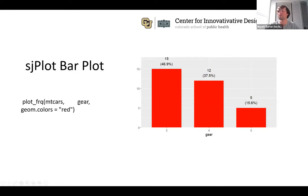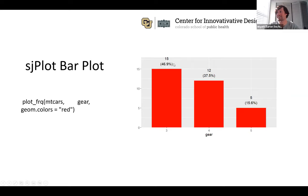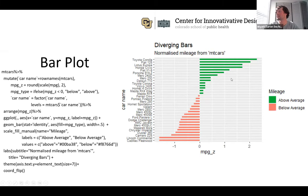The sjplot bar plot is actually a lot better for quick use — much cleaner and simpler. You just load the data, specify the variable, and optionally set a color. It automatically gives you the percentage and count for each level. The only downside is you can only set one color for all bars, not individual colors per level. But it takes far less effort and the text labels come for free.